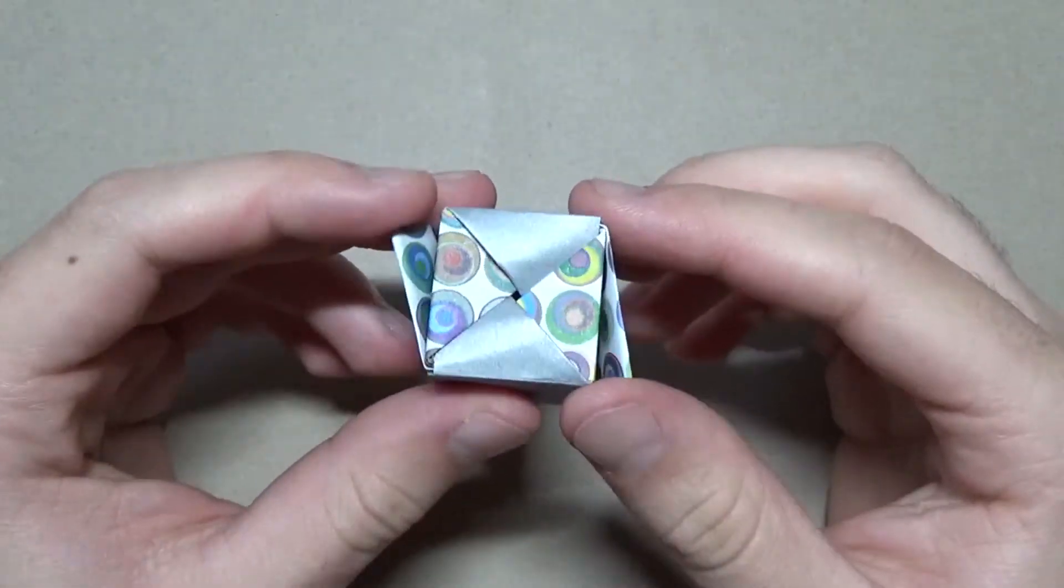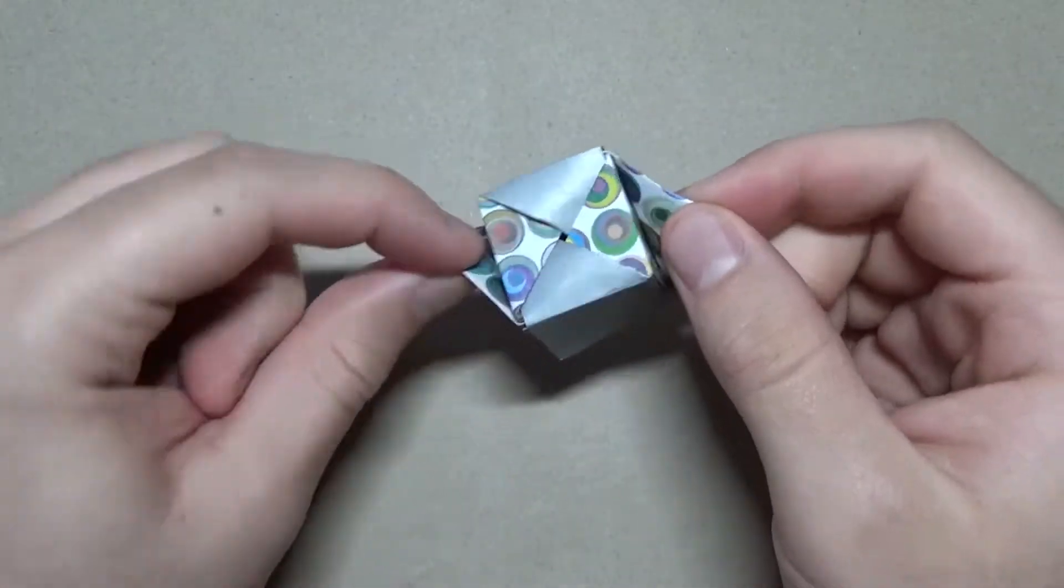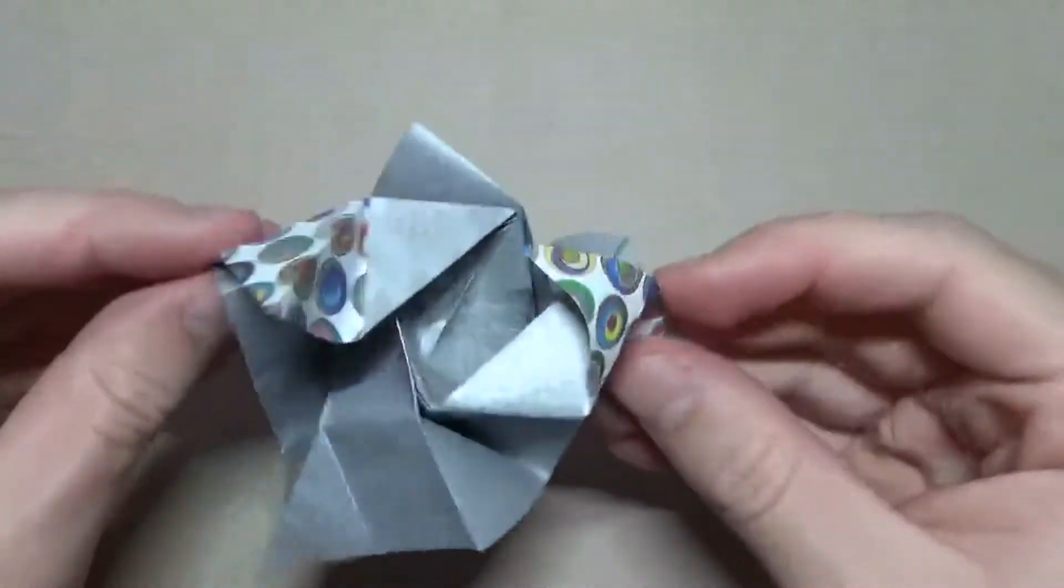It's a flasher cube and what's really cool about it is that you just pull two sides like this and it opens up into a nice flasher. See, and it's iso area.